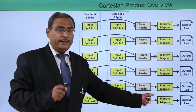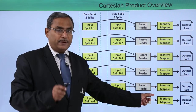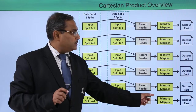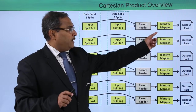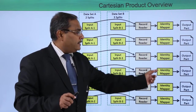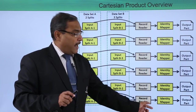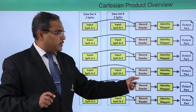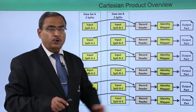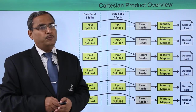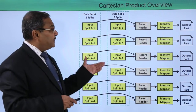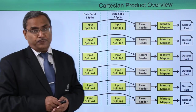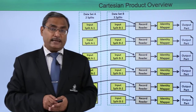It is having only the mappers — no combiners, no reducers, no partitioners. Here we are having identity mappers, and these mappers will be taking the input from the record reader and that will produce the final output. So this is the basic concept of this Cartesian product design pattern.